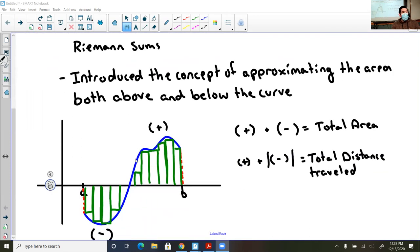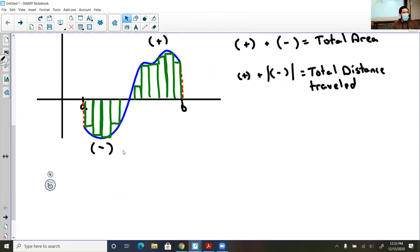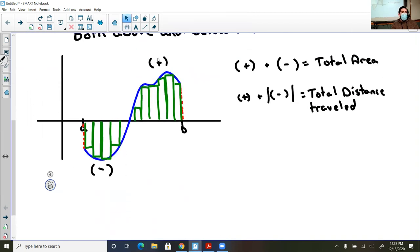So Riemann was able to conclude an image like this. He had decided that what if he had a curve above the x-axis, above that horizontal axis? Well, those would all be positive areas.